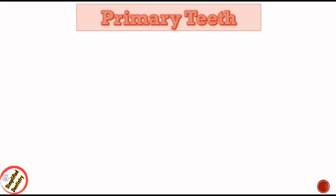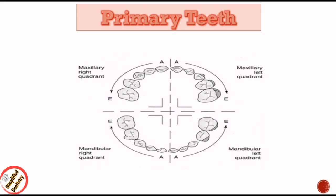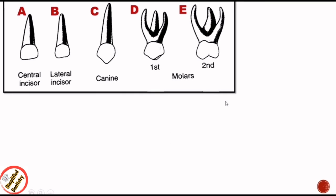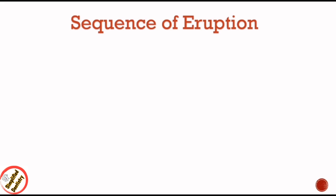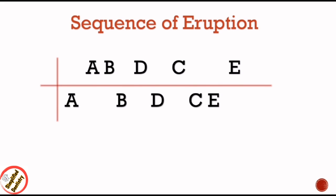First let's see for primary teeth. In Palmer notation, the uppercase English letters A to E are used to depict the primary teeth in each quadrant, and the numbering starts from midline and continues backward. In each quadrant, A stands for central incisor, B for lateral incisor, C for canine, D for first molar, and E for second molar. The eruption sequence for both maxillary and mandibular teeth in primary dentition is ABDCE.